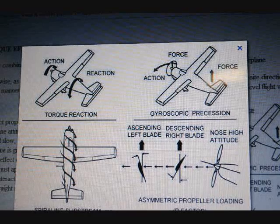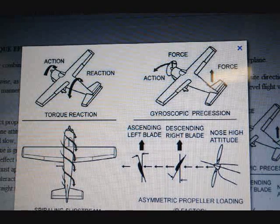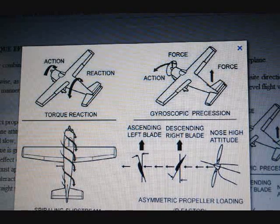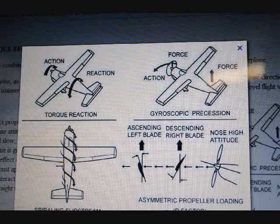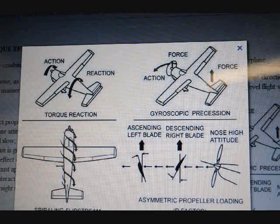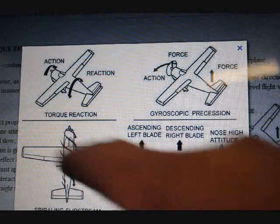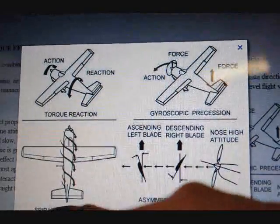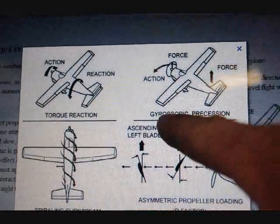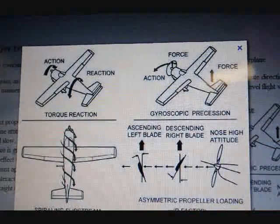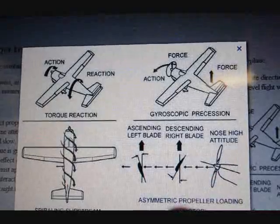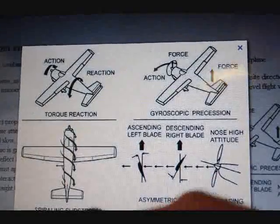In this video, we're going to talk about left-turning tendencies of the aircraft. The four left-turning tendencies are torque, gyroscopic precession, P-factor, and the spiraling slipstream.